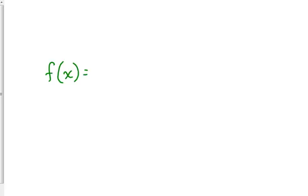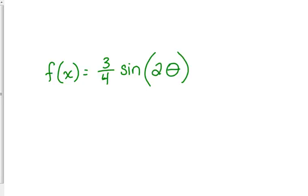Let's do one that has them all. Give me a number between zero and one other than one. [Student: 0.75, three-fourths.] Okay, three-fourths. Sine of — give me a number between one and three. [Student: two.] So our function is three-fourths sine of two-theta. They'll sometimes use theta instead of x — theta is just a variable. Give me a number between zero and four. [Student: three.] So three-fourths sine of two-theta plus three.